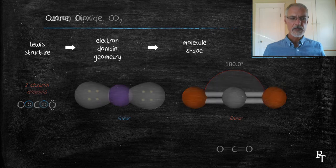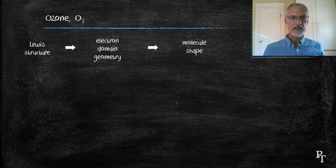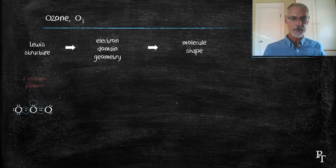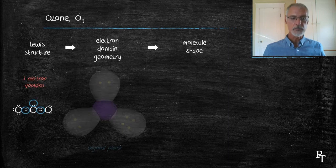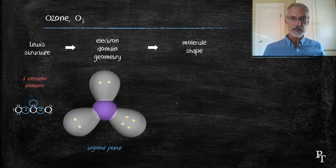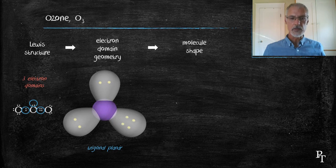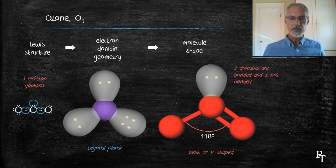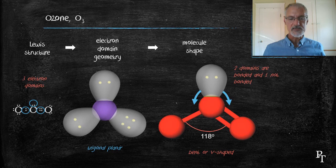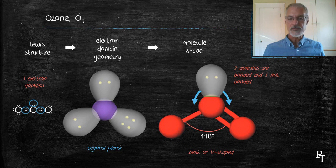Ozone. From its Lewis dot diagram, I can identify that there are three regions around that central atom. Three regions means I'm going to begin with a flat triangle, trigonal planar. This would have the regions all 120 degrees from each other. However, I noticed in this particular molecule that two domains are bonded and one is not. So that 120 degrees will be distorted somewhat. And here we can see that unbonded pair has distorted the angle down to 118 degrees. This is called a bent, or a V-shape.